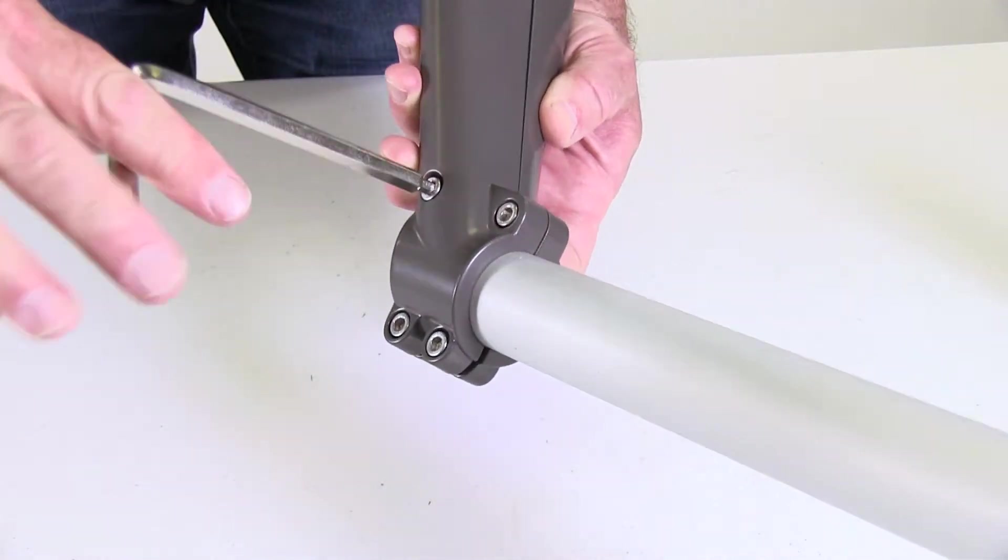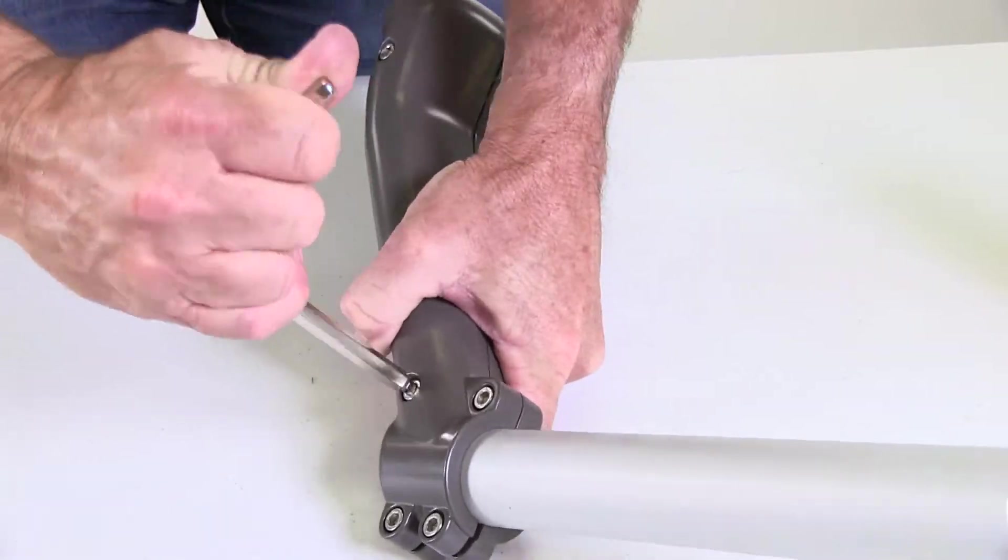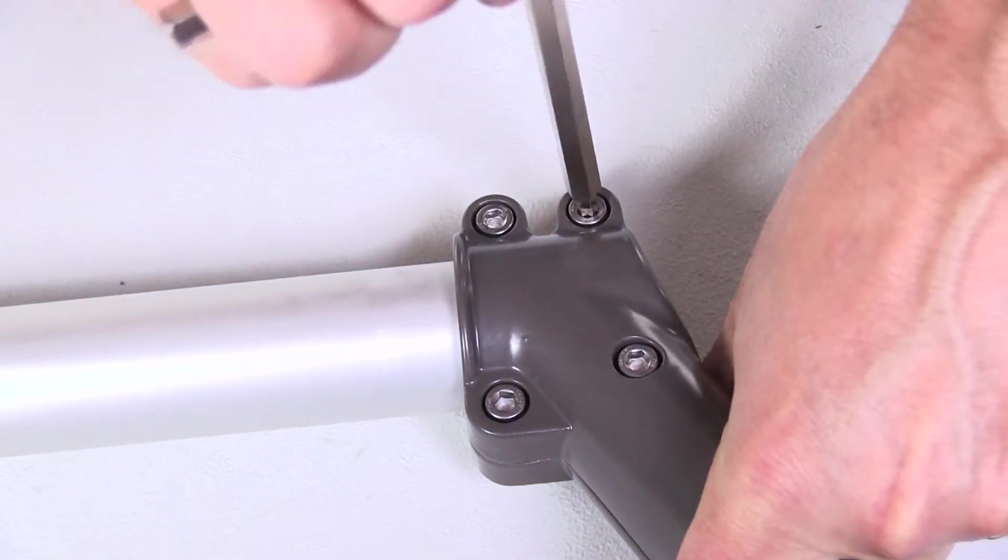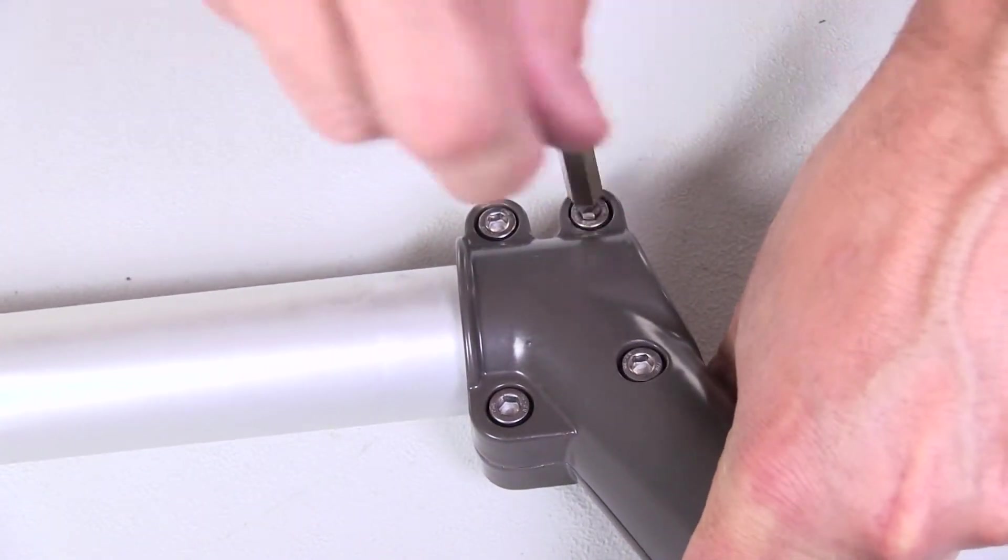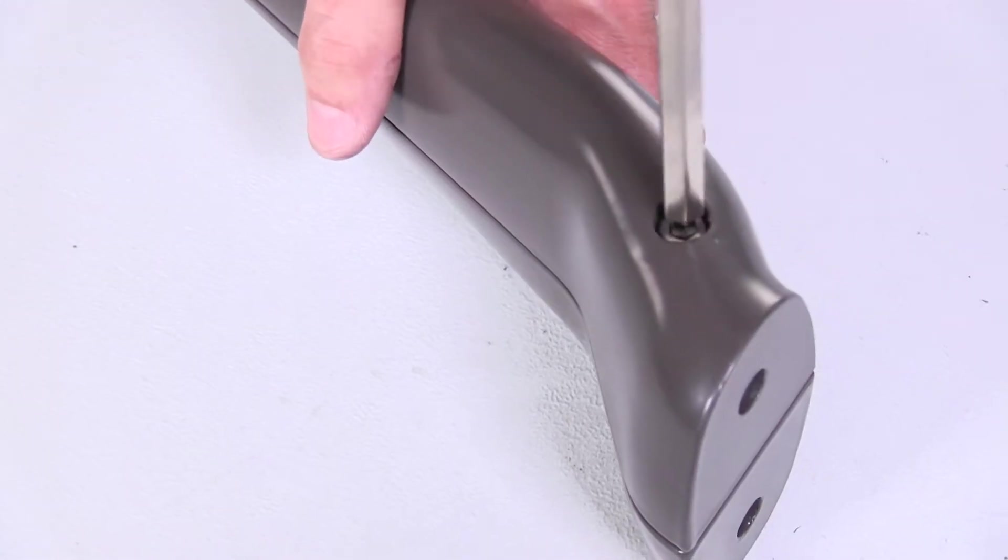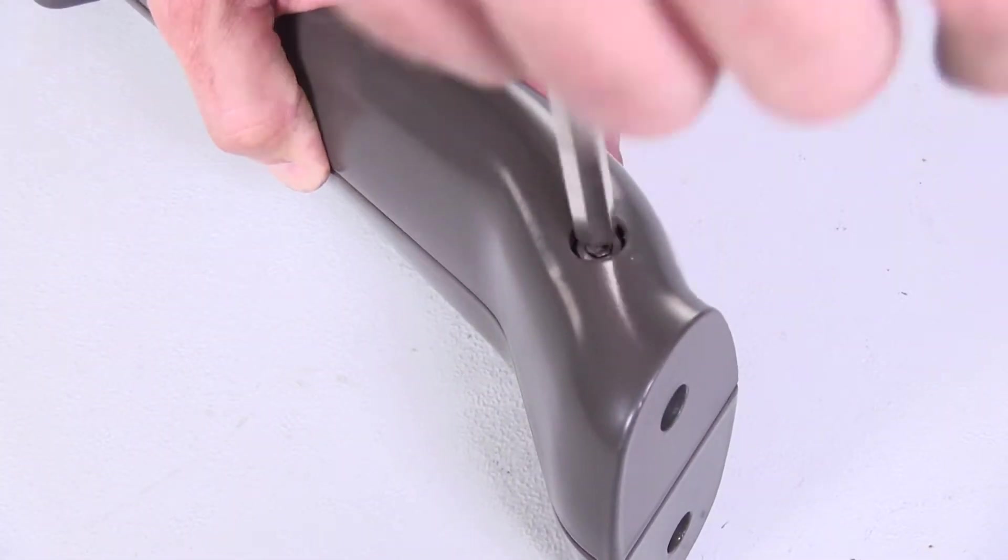Continue reinserting the remaining screws. Once you have all the screws started, you can go ahead and tighten down all four top screws. Then retighten the bottom screw that you had loosened three rotations.